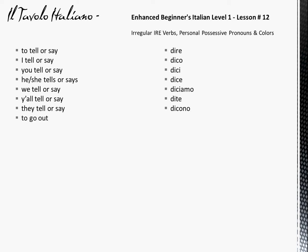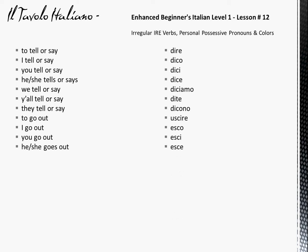To go out: [pause] Uscire. I go out: [pause] Esco. You go out: [pause] Esci. He or she goes out: [pause] Esce. We go out: [pause] Usciamo. Y'all go out: [pause] Uscite. They go out: [pause] Escono. Escono.